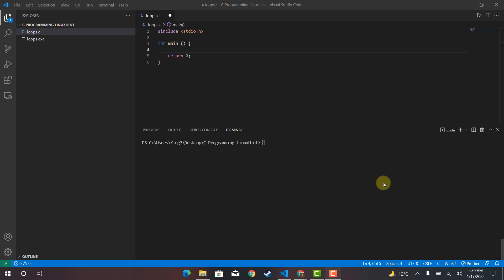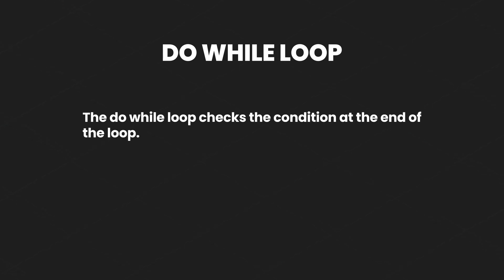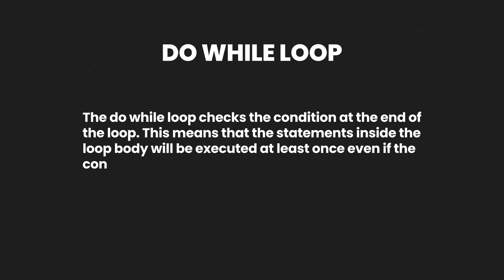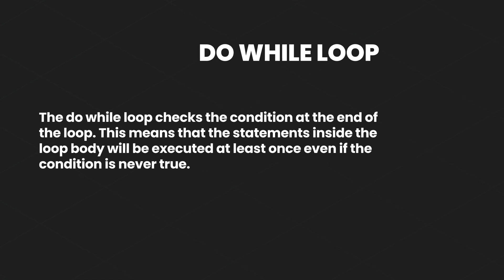Now we move on to the second loop — the do-while loop. Unlike the while loop, which checks the condition first and then executes the body, the do-while executes the body one time first, and after that checks the condition. The whole cycle then repeats until the condition results in a false value.